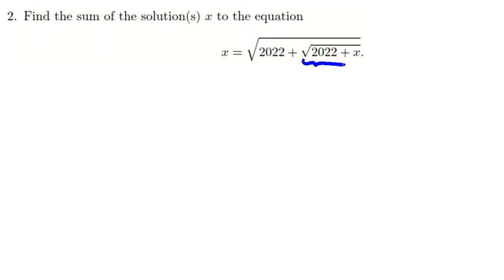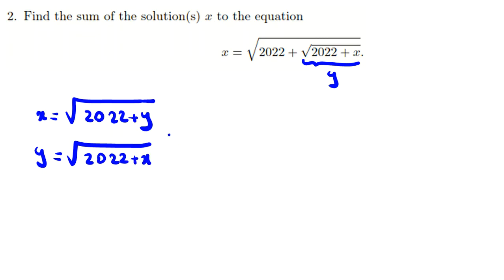You can consider this part as y. Now we see two similar equations: x equals the square root of 2022 plus y, and y equals the square root of 2022 plus x. We see they are similar, involving both x and y.